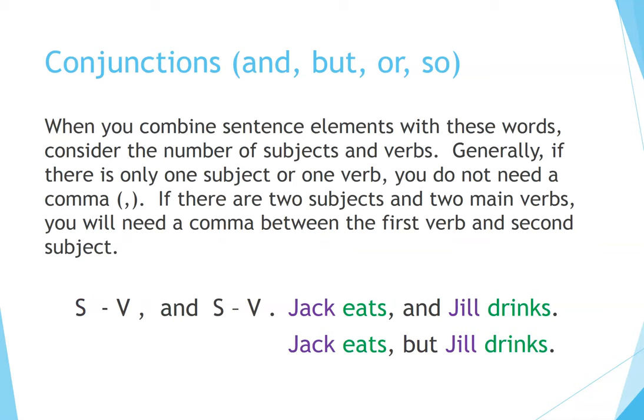Conjunctions: And, But, Or, So. When you combine sentence elements with these words, consider the number of subjects and verbs. Generally, if there is only one subject or one verb, you do not need a comma. If there are two subjects and two main verbs, you will need a comma between the first verb and the second subject.